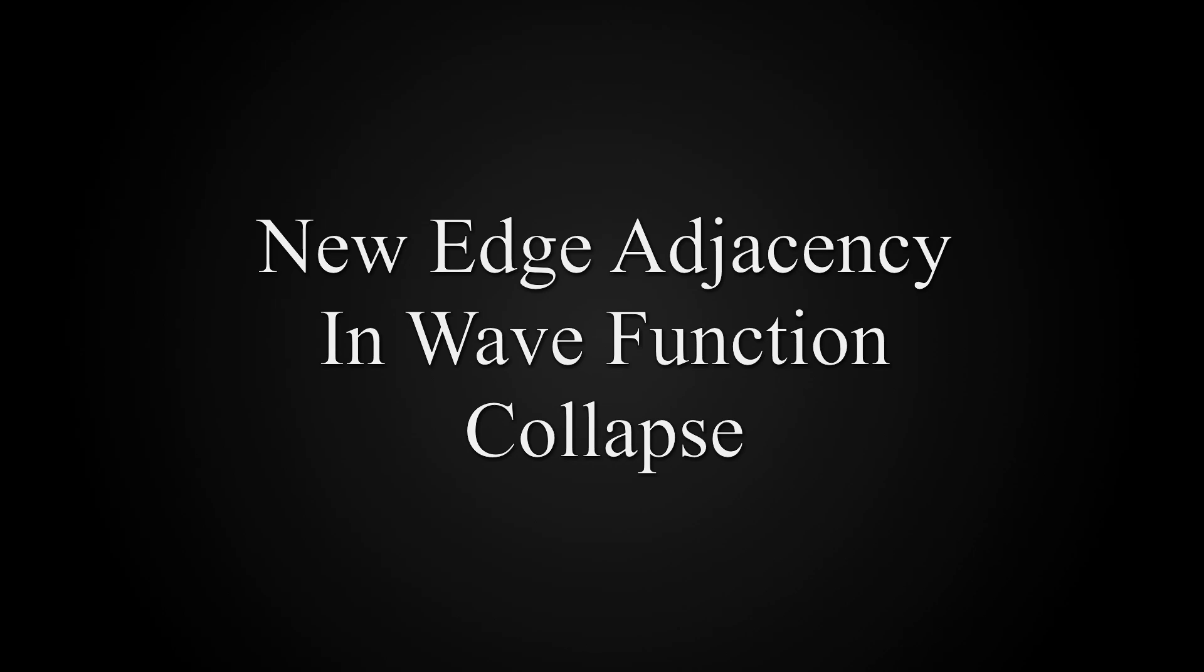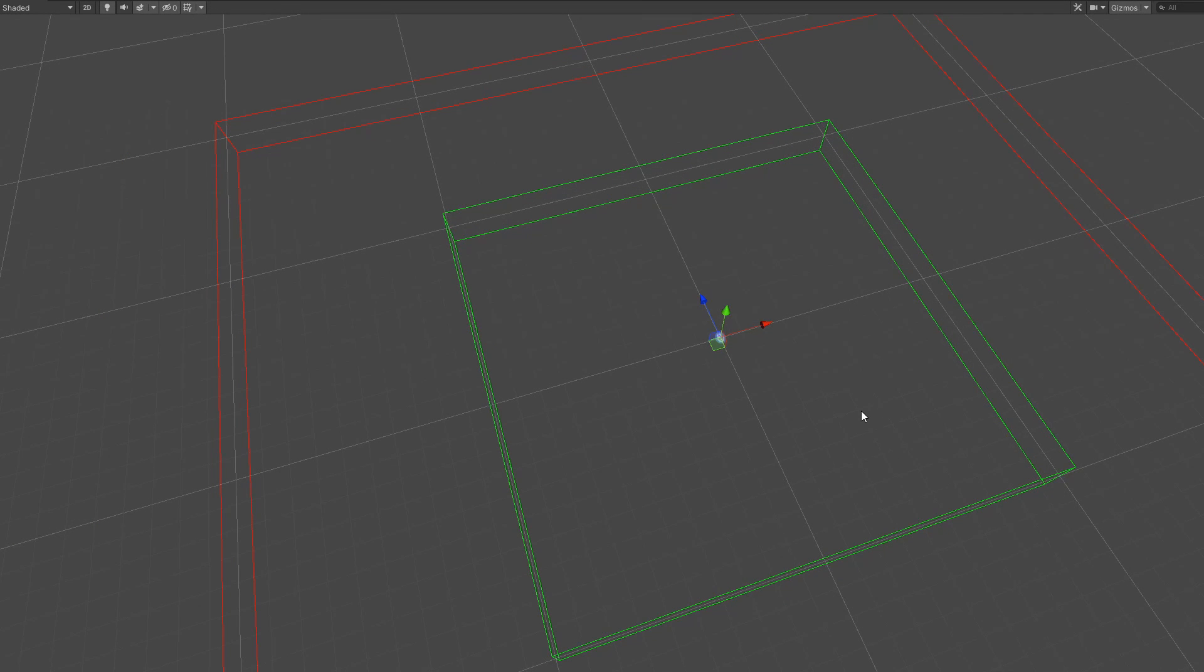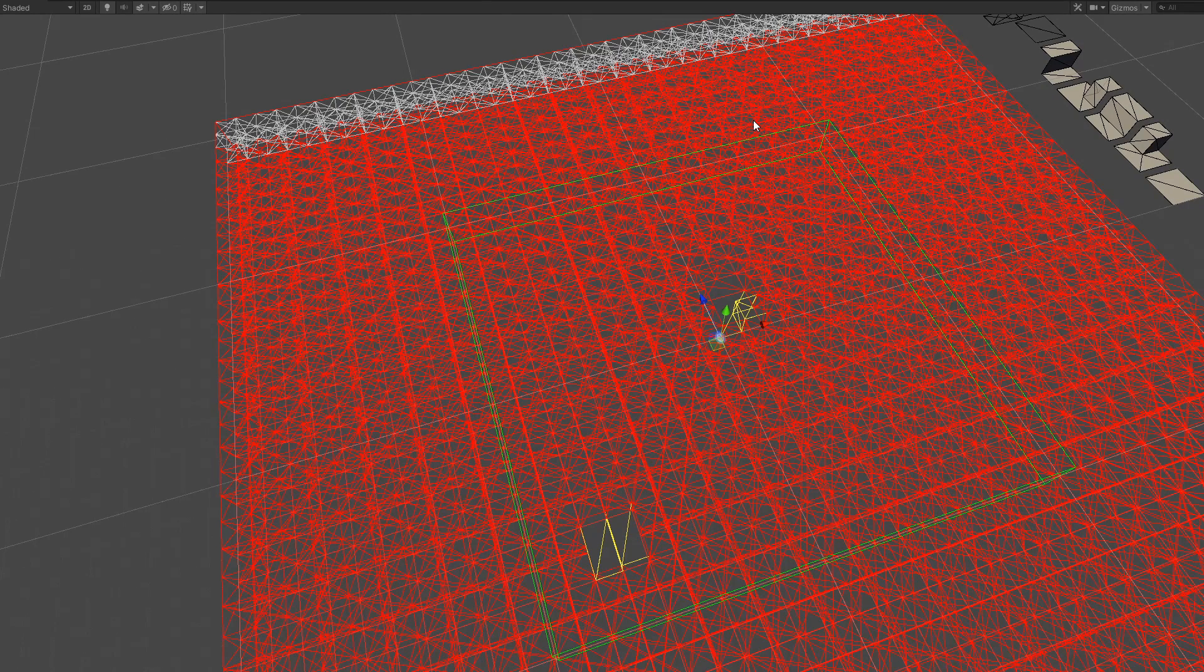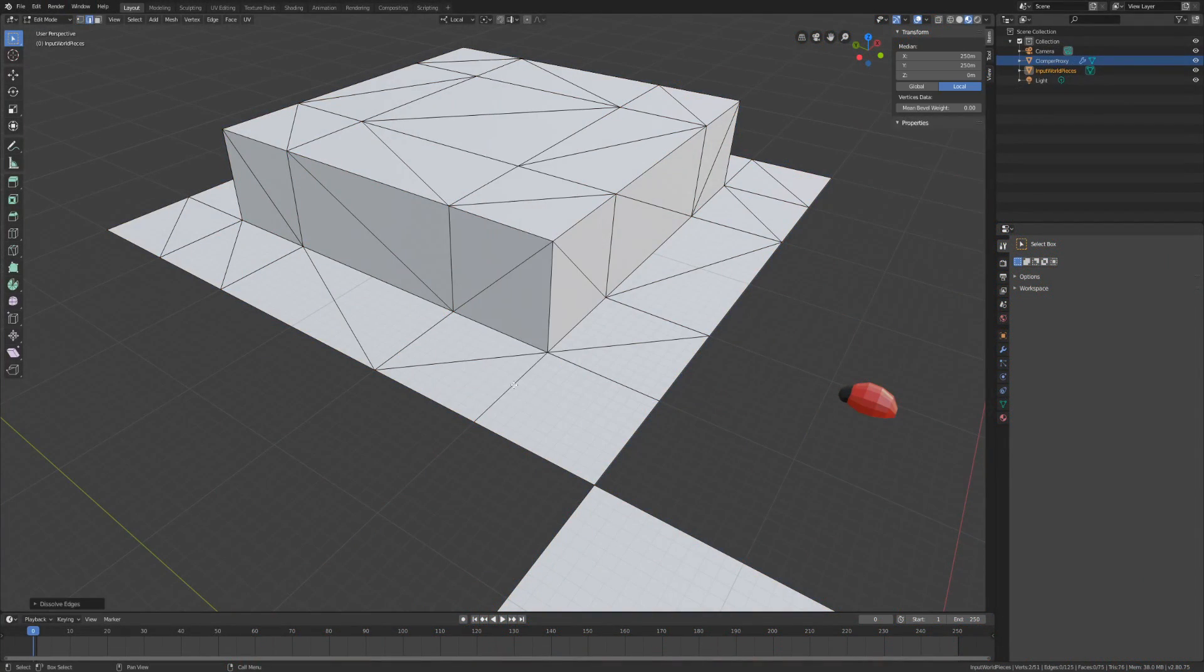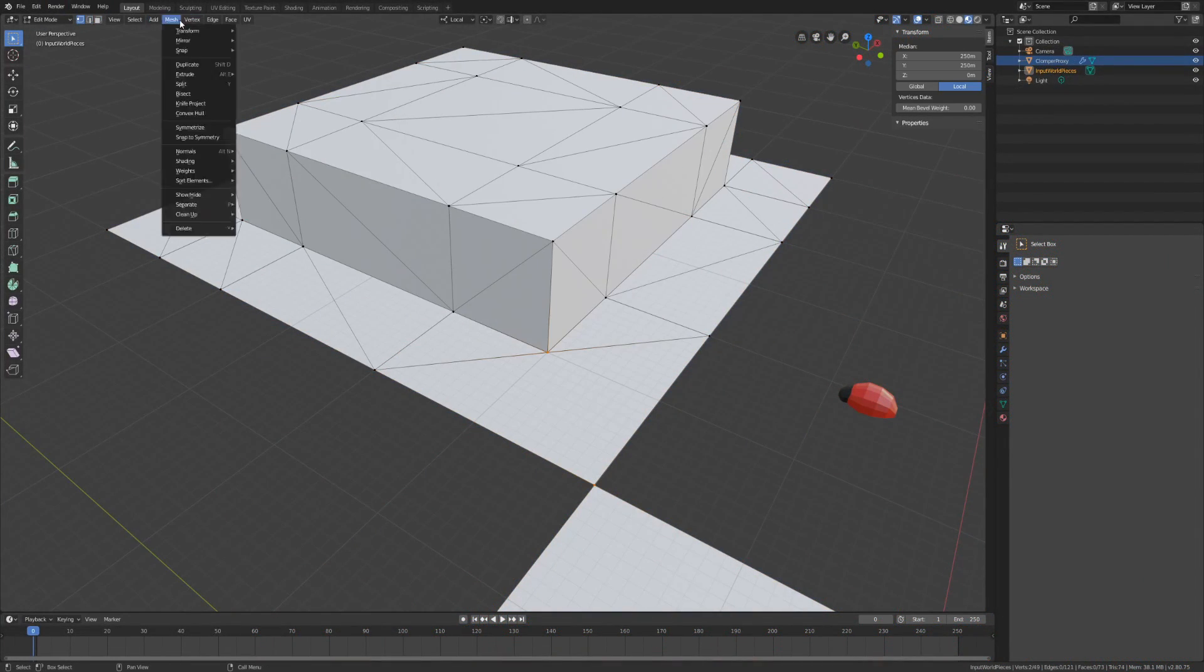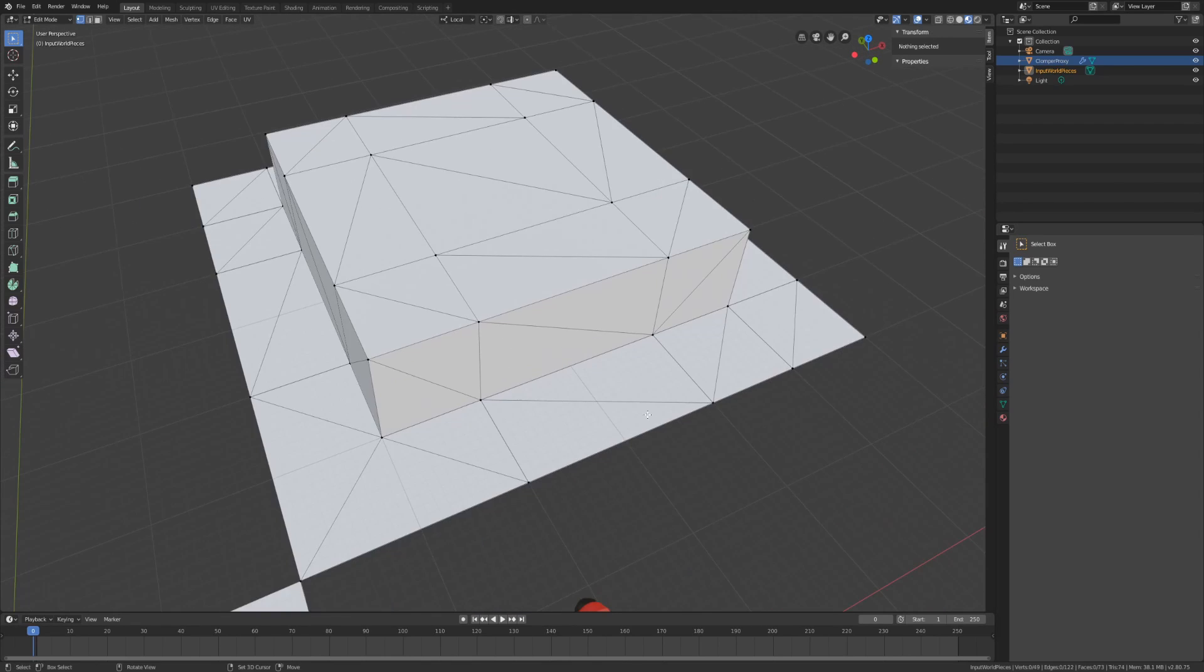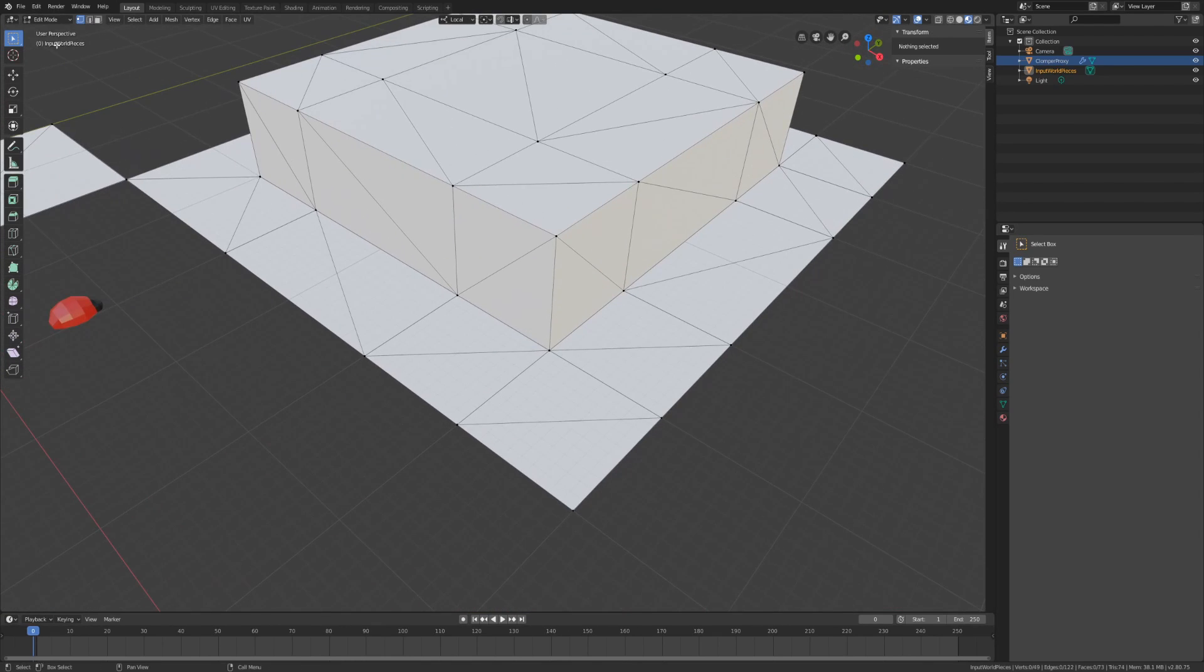So with a cool new adjacency algorithm, the world's wave function collapse can now build a world which is much cooler, right? Well, maybe not just yet. If you found that useful, hit like and subscribe, and if you have any questions or feedback, please do leave a comment. Until next time, stay safe. Bye bye.